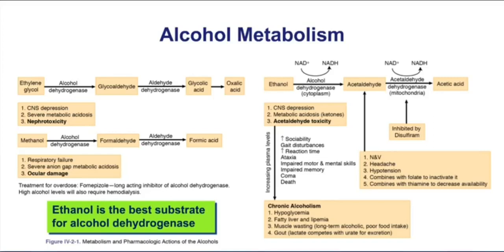There is a drug called fomepizole, which is a long-acting inhibitor of alcohol dehydrogenase. You can argue this is a better option than ethanol for alcohol poisoning, because fomepizole is going to block all alcohol metabolism — preventing the alcohol from being converted to its aldehyde form, and that prevents many of the side effects associated with alcohols.